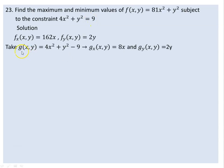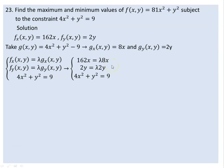The partial derivative of g with respect to x is 8x, and the partial derivative of g with respect to y is 2y. Applying the Lagrange multiplier principle: f_x equals lambda times g_x, f_y equals lambda times g_y. Together with the constraint, this gives us a system of three equations with three unknowns, which is solvable.